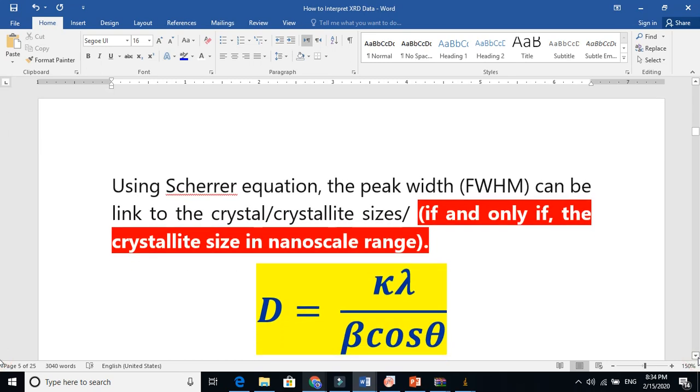We use Scherrer equation to link this full width half maxima to the crystallite size. From the full width at half maxima value, we can understand and estimate what is the crystallite size.